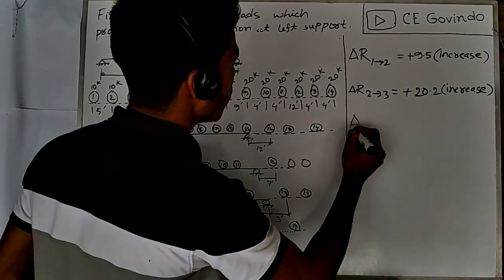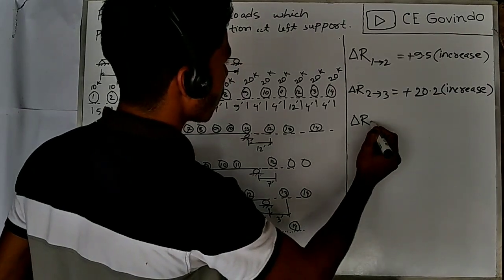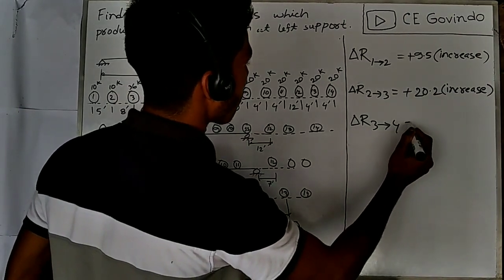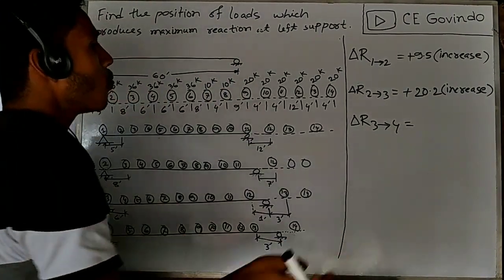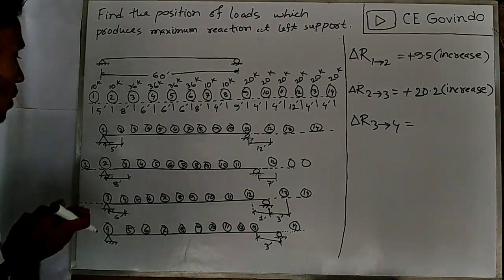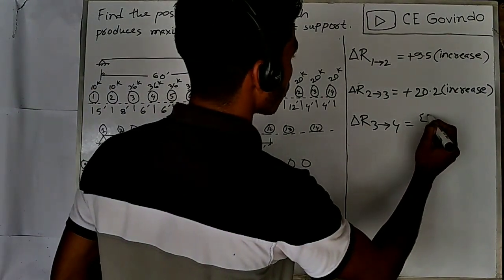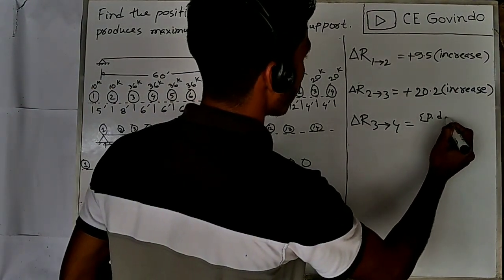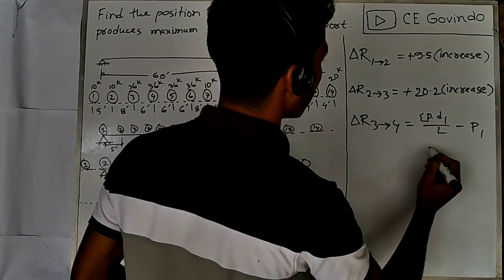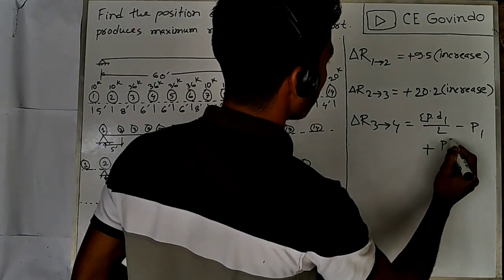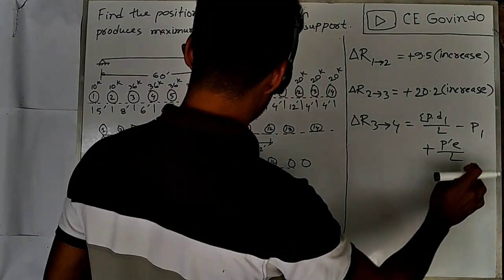The change in reaction due to moving from position 3 to position 4: wheel 3 is at position 4. We calculate the change of pd1 by l, minus p1 plus p-prime e by l.